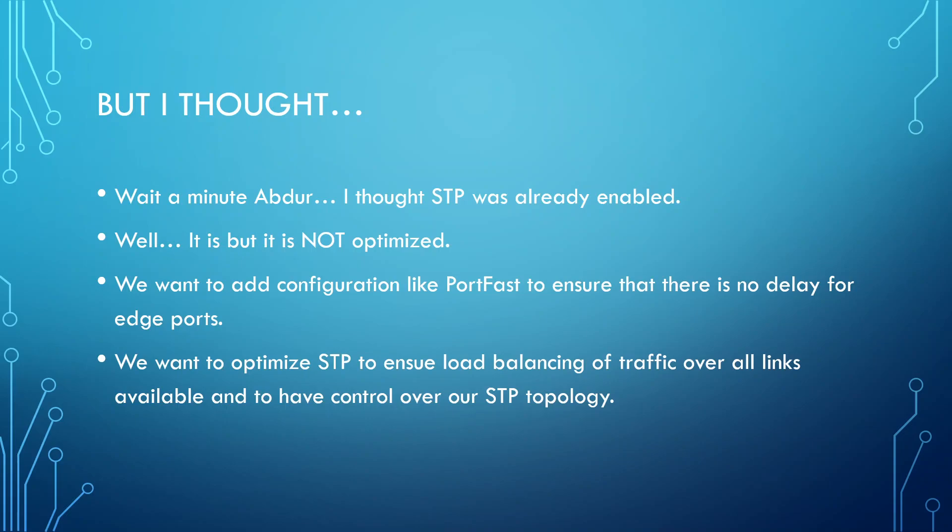With STP, we have a central point of reference, and all switches look for the fastest path to reach that center point of reference. If we don't change any configuration with Spanning Tree Protocol, it's not optimized - that is the big issue. We have to configure certain features to optimize STP so that we have control and can rig the election - dictating which switch is the root bridge and which is the secondary root bridge in case the primary fails.